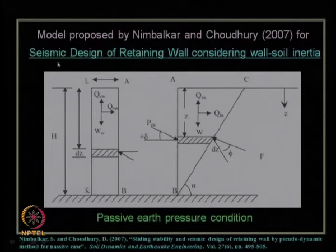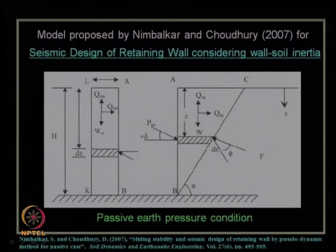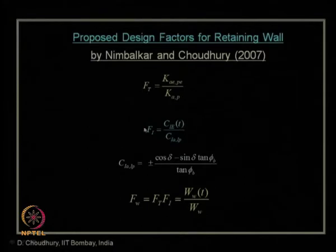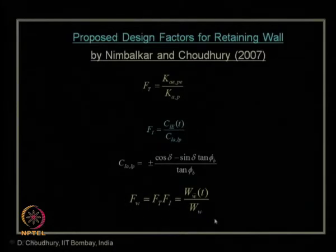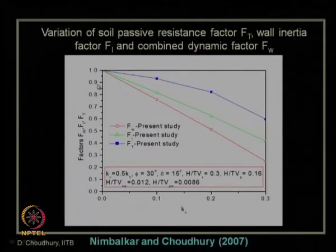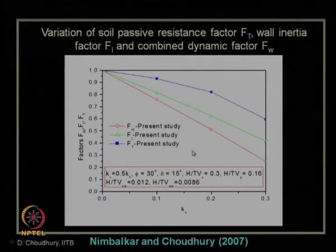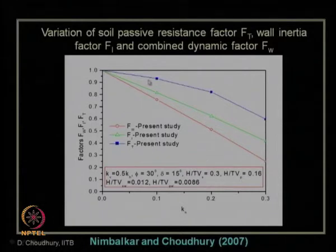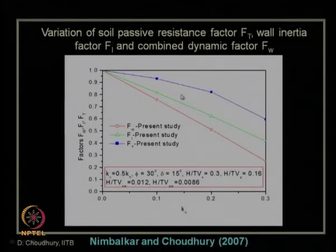In the passive state of earth pressure, we design for lighter walls under seismic loading. Many times for wall design we exclude passive state unless clearly known; we mostly design for active earth pressure. Passive state is used mainly for bearing capacity, anchor uplift capacity, etc. Displacement-based analysis also covers rotational displacement — in addition to the sliding mode — for the pseudo-dynamic approach applied to both wall and soil.